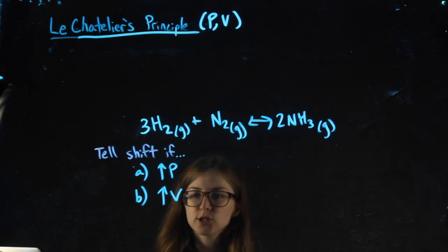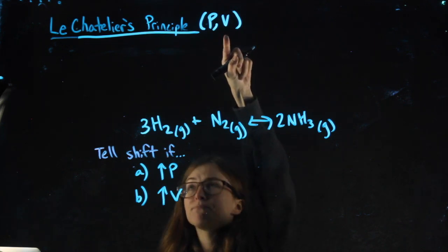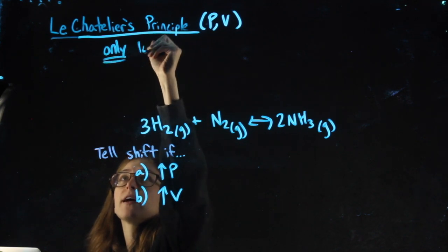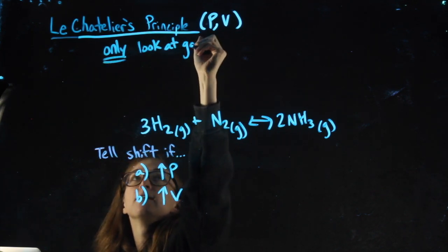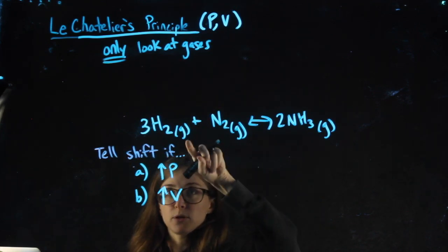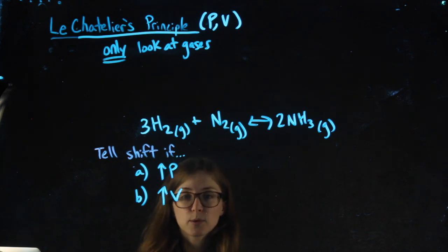All right, sometimes a question will ask you about pressure and volume, or pressure or volume. In the questions when they ask about pressure and volume, it's important that you only look at gases. You'll know something is a gas because I'll denote it with this G symbol here. So we only look at gases that are the only thing that affect pressure and volume.